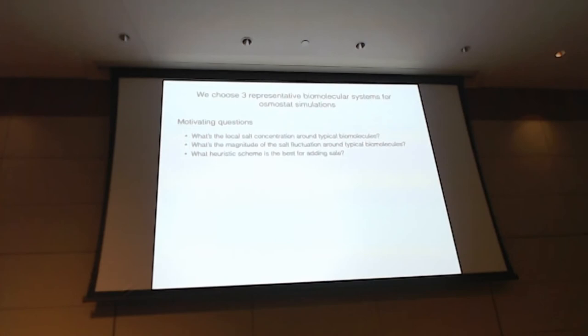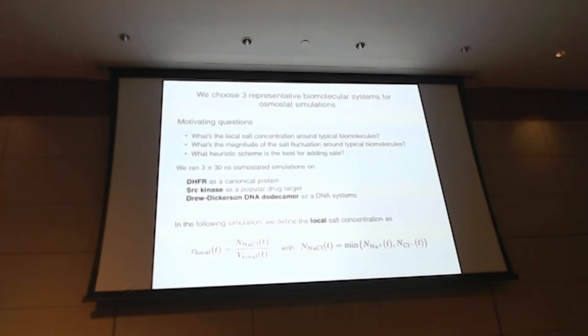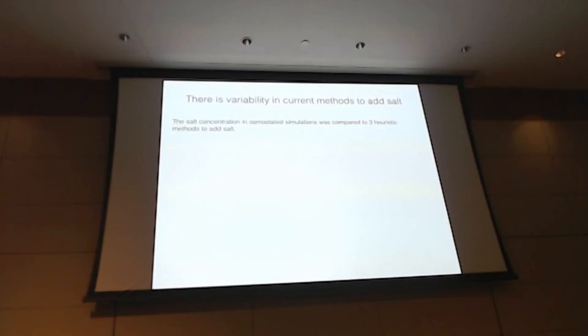So returning to the motivating questions of how much salt do we expect to see on biomolecules, and what's the best scheme to add salt, we applied the osmostat on DHFR, Src kinase, and a Drew Dickerson DNA dodecamer. And the plots I'm about to show define the local salt concentration as the number of salt pairs over the total volume. And current methods to add salt in fixed-salt MD, you can either add salt based on the total simulation volume, such as in GROMACS, the volume of the solvents, such as in CHARMGUI, or the ratio of water molecules to salt pairs, such as in OpenMM. And this is always after neutralizing counter-ions have been added.